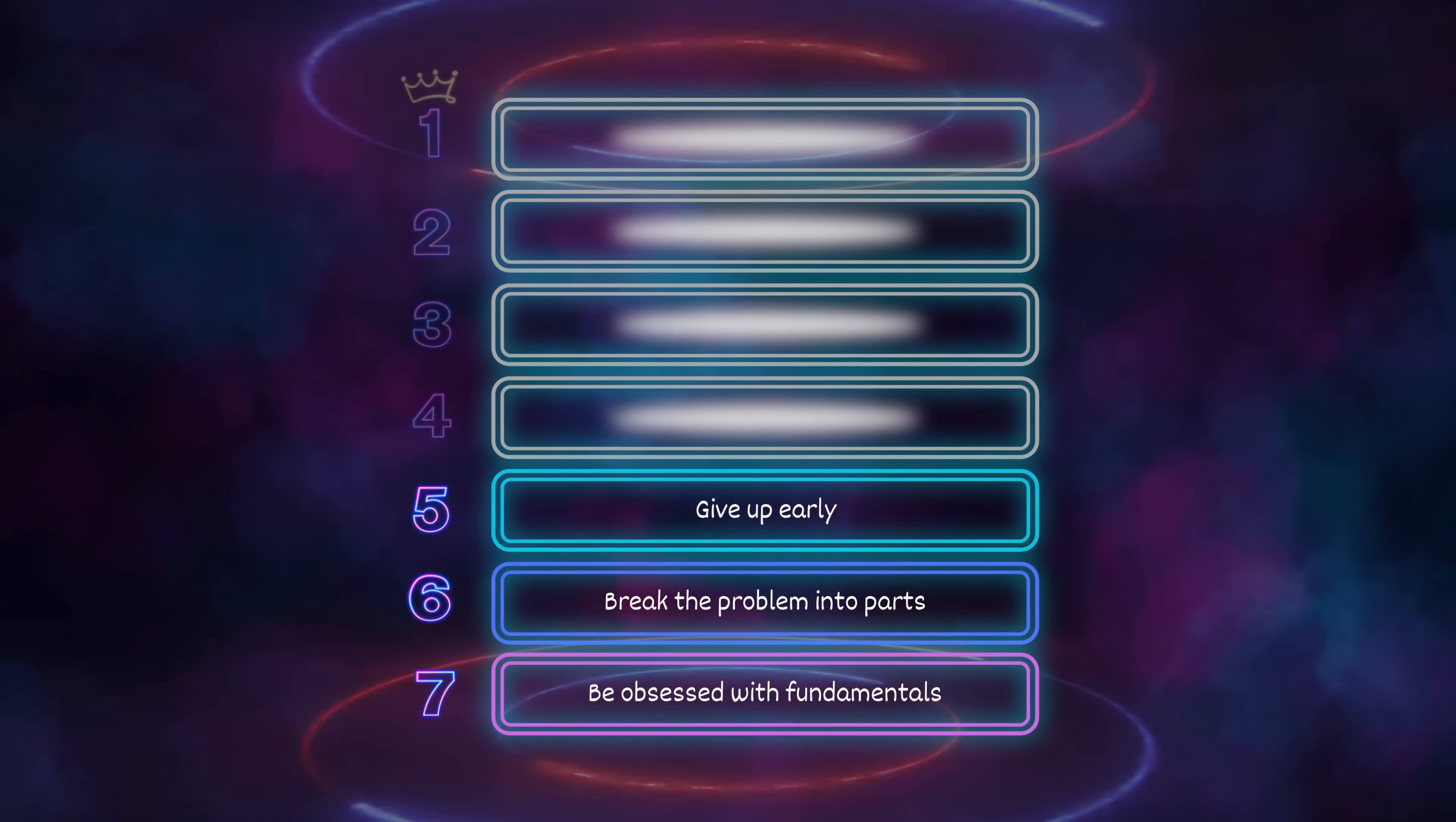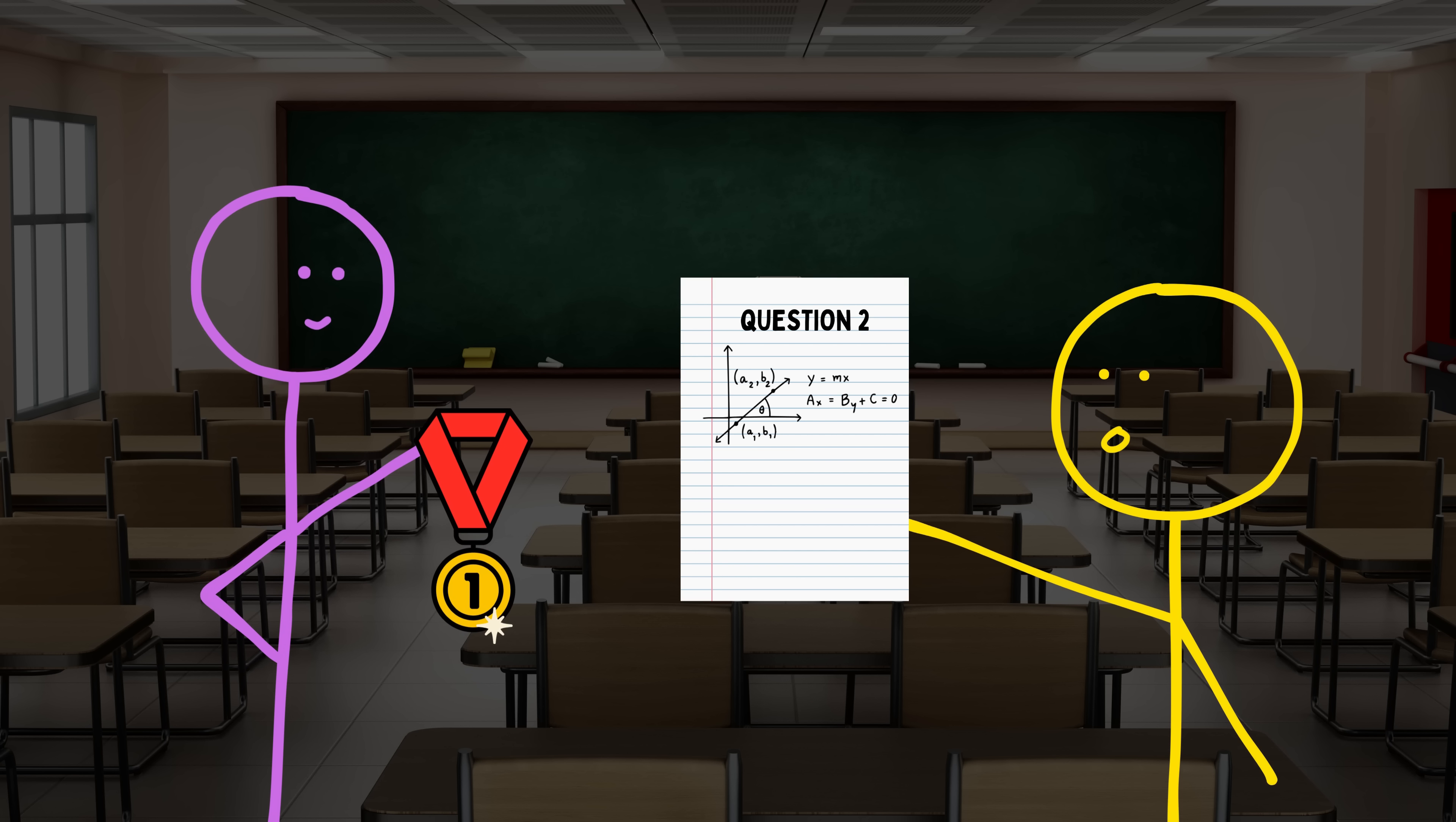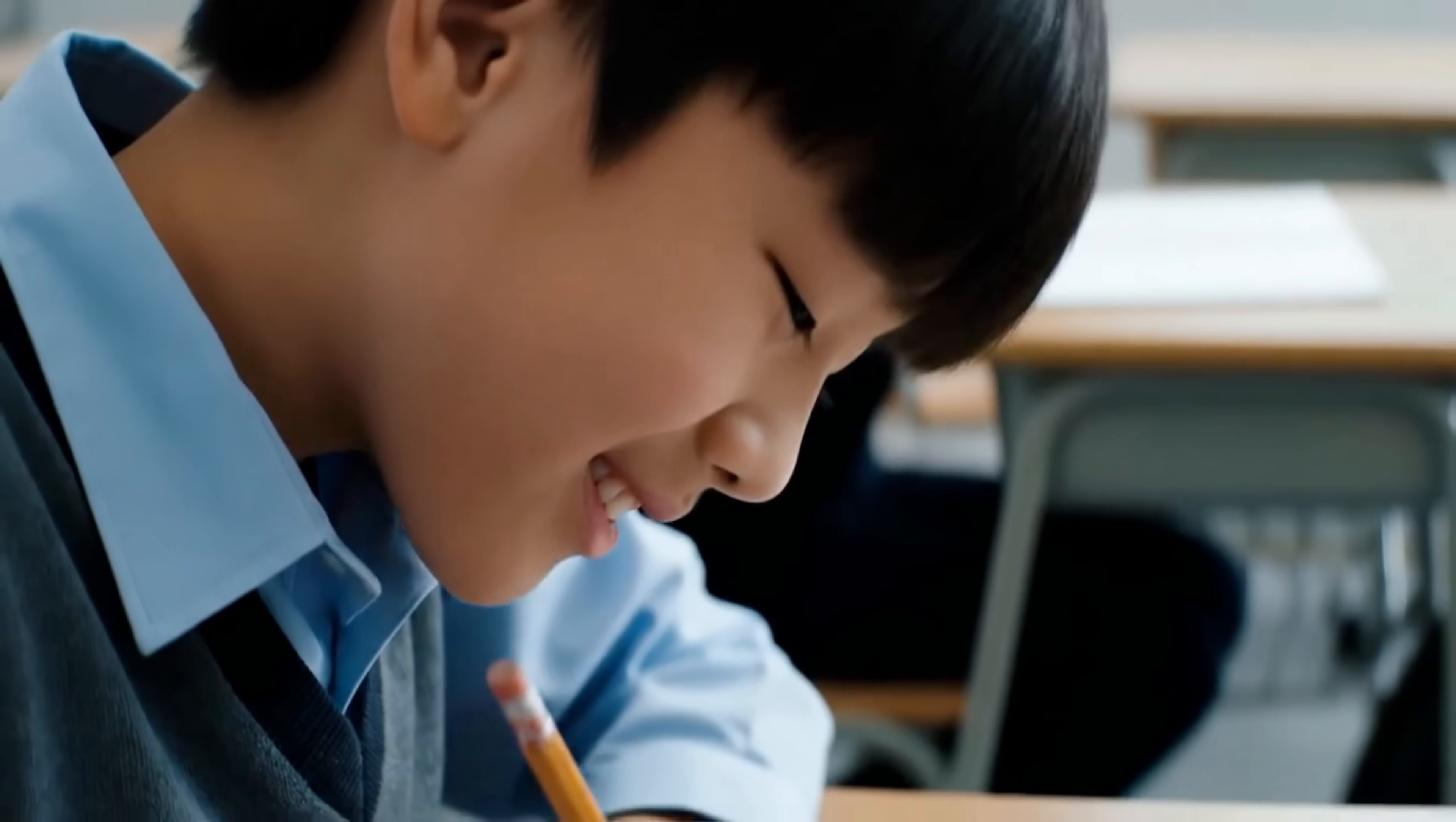Number 5: Give up early. Look, dumbass, nobody's handing out medals for sitting there staring at a math problem like a frozen chicken nugget. You're not grinding, you're just wasting time. Asian students don't do that crap. They know when to give up early and move smart.